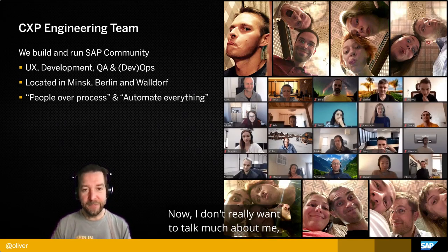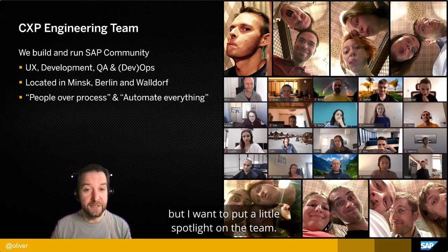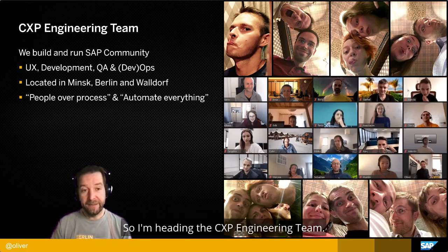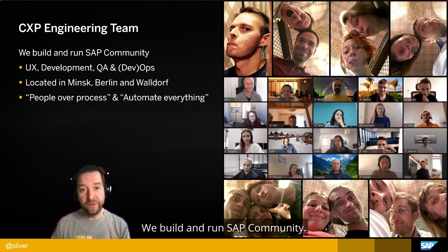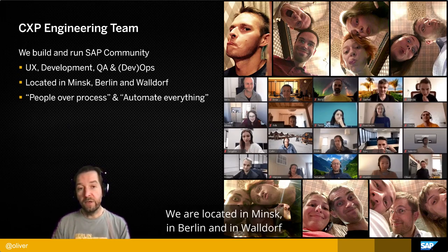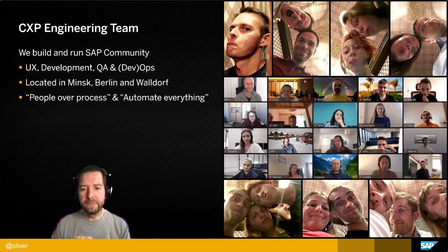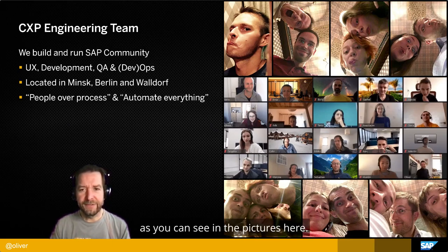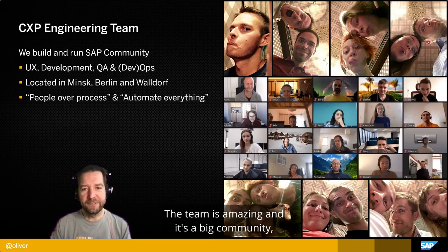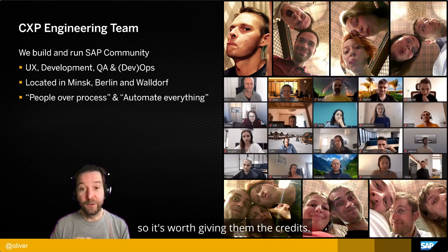I don't want to talk much about myself — if you're interested in connecting, you can find me on Twitter. I want to put a spotlight on the team. I'm heading the CXP engineering team; we build and run SAP Community. We are cross-functional — UX, development, QA, operations, and DevOps all in one team. We are located in Minsk, Berlin, and Waldorf. We try to live up to agile and DevOps principles on a daily basis and still try to have fun. The team is amazing, and SAP Community in its current form wouldn't have been possible without them.